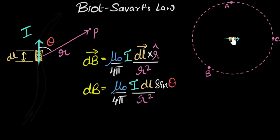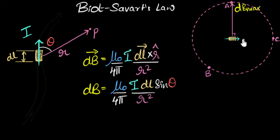The current is to the right. For point A at the side, r goes from the element to that point, making a 90-degree angle with the current. Sine(90°) = 1, the maximum value — so at that point you get the maximum value of dB. At another point on the circle where r makes an obtuse angle, sine of that angle is less than one, so dB is going to be smaller.